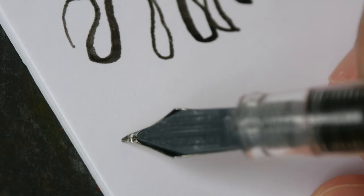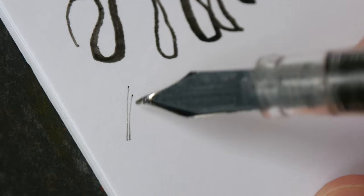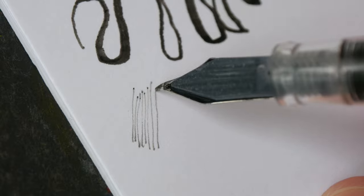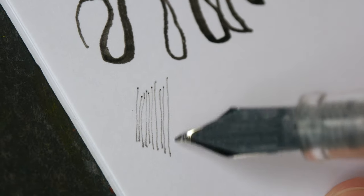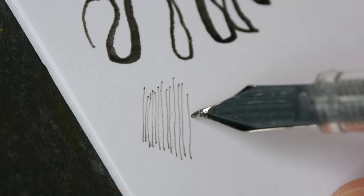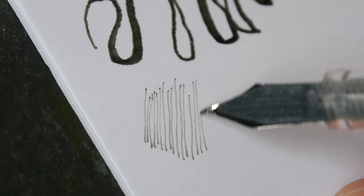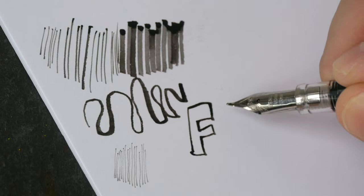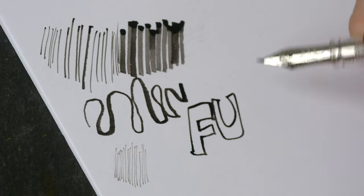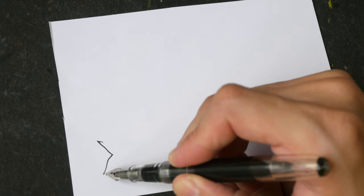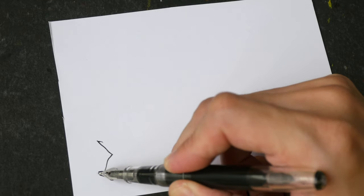If you want really thin lines, you can turn the pen nib upside down and draw like this, but the ink flow is not as great, so you have to draw really slowly. So these are the lines you can create with just one single nib. That's why this pen nib is so versatile. Let me draw something really quickly.